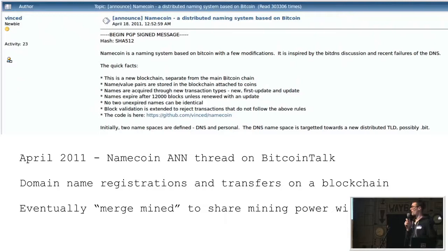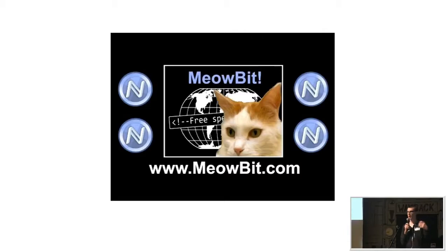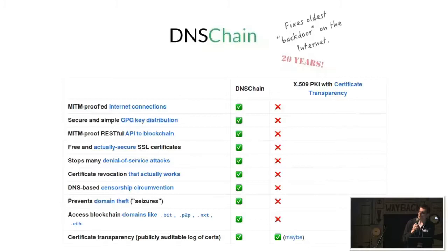Merge mining was a somewhat controversial move, though Satoshi had already predicted this was possible. Some interesting applications built for Namecoin include Meow Bit, a browser extension that made it possible to type Namecoin domains into your normal browser and navigate to those websites — a very cool feature.